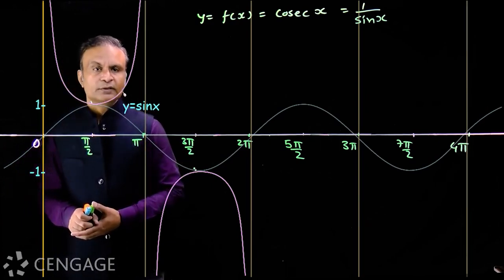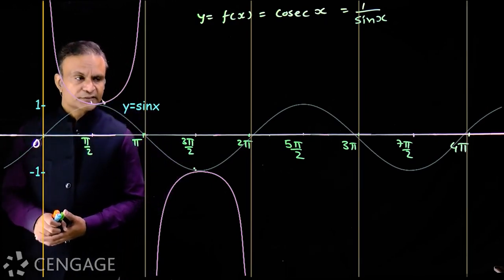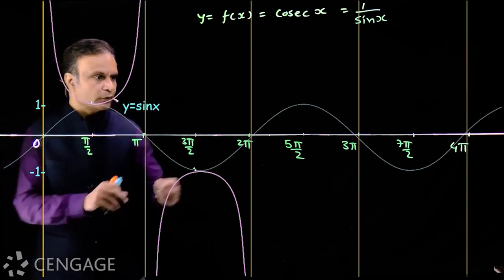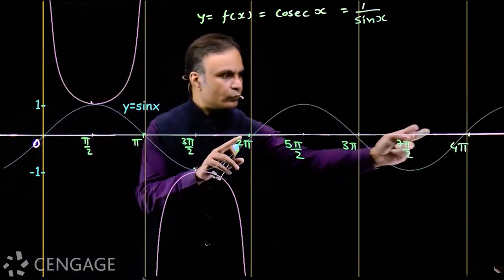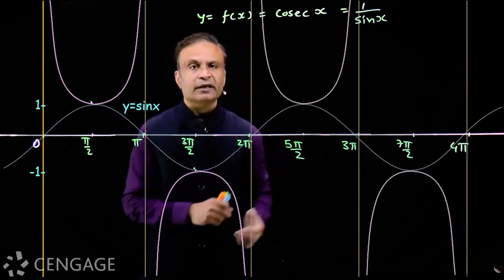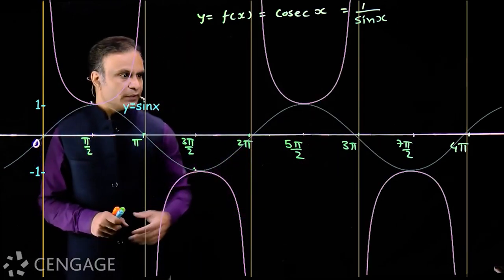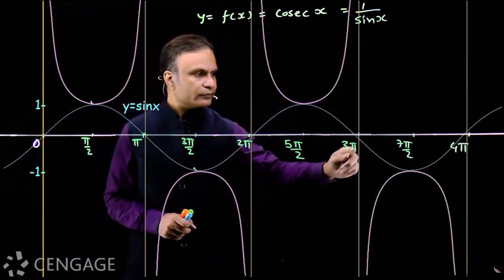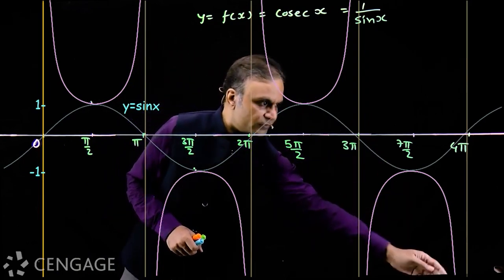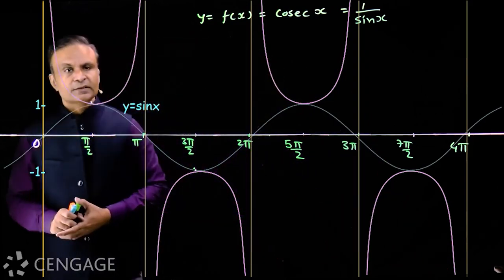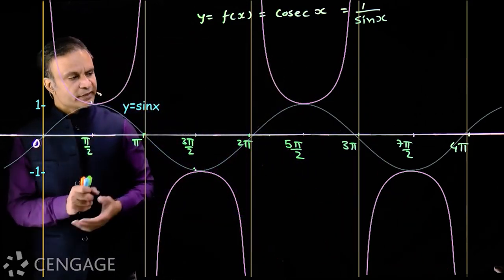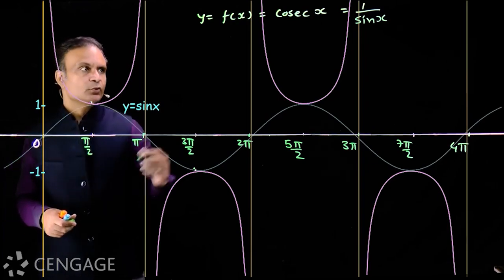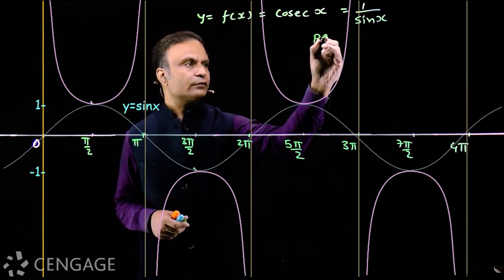This is one complete cycle of the function y = cosec x. In the next interval of width 2π, from 2π to 4π, we have the same graph. From 2π to 3π we have this graph, and from 3π to 4π we have this graph. So from here we can say the period of cosec x is also 2π.